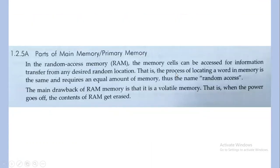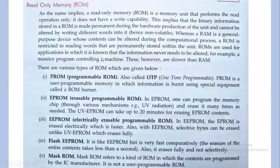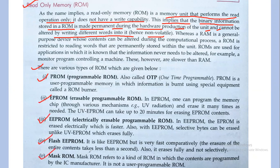Parts of main memory include DRAM (Dynamic RAM) and SRAM (Static RAM). Then there is Read Only Memory (ROM), which is a memory unit that performs read operations only — it has no write capability. The binary information stored in ROM is made permanent during hardware production and cannot be altered, making it non-volatile. Various types of ROM include PROM, EPROM, EEPROM, Flash EEPROM, and Mask ROM.